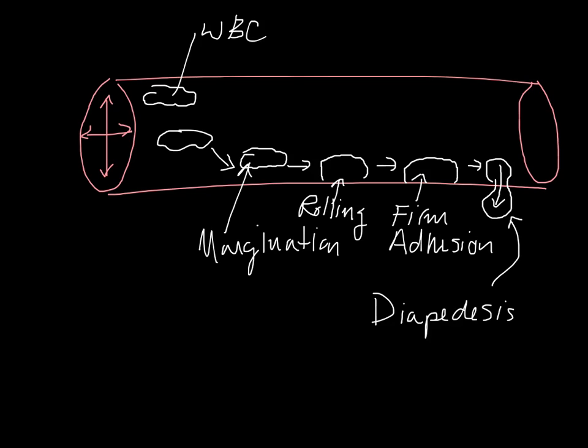Diapedesis is then going to be followed by chemotaxis. Chemotaxis is described as sort of a chemically induced signaling process which would allow that white blood cell to go all which ways after it has left circulation. So very importantly, chemotaxis occurs after a white blood cell has left circulation via the process of diapedesis. And sometimes chemotaxis is described as a white blood cell following a chemical gradient.